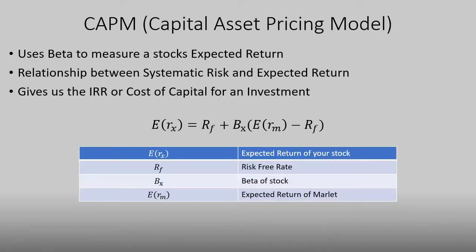The reason why we calculated beta is because it allows us to see how risky and how susceptible our investment is to the market portfolio. Because of this, we can use the beta and the Capital Asset Pricing Model (CAPM), which allows us to generate an expected return. The CAPM formula is: risk-free rate plus beta times the market risk premium — that is, the expected return of the market minus the risk-free rate.